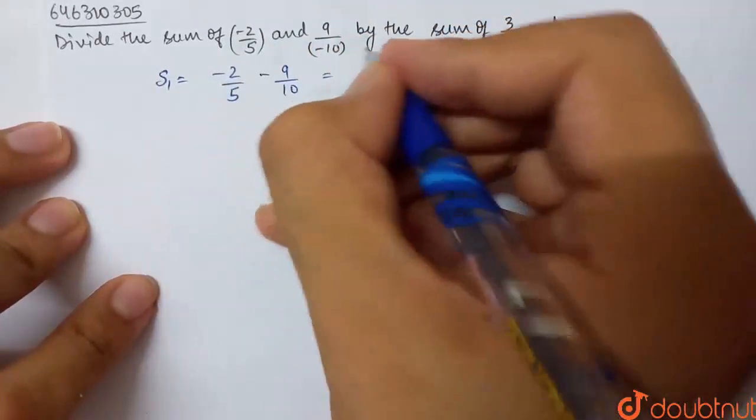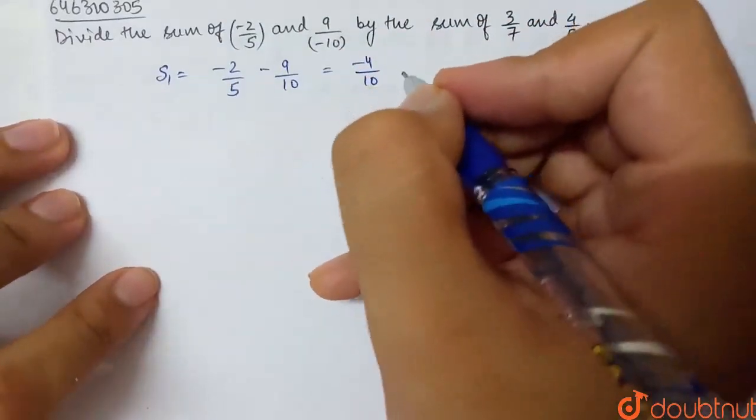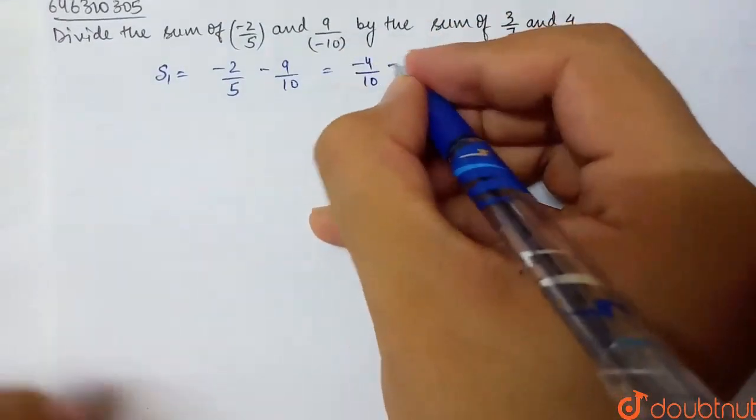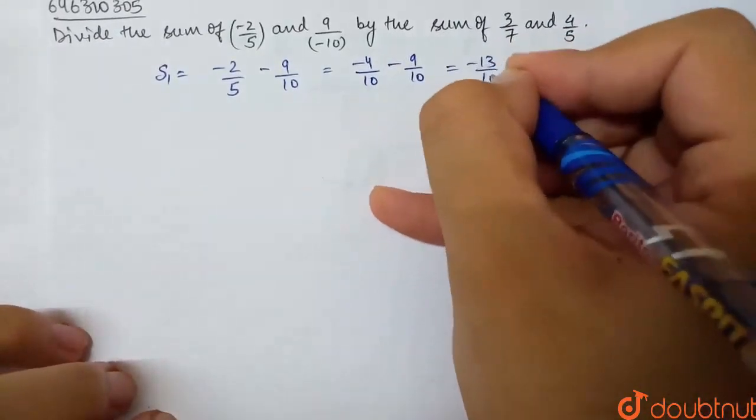Now we will multiply this denominator by 2, which is minus 2 into 2, which is minus 4/10. Multiply, divide by 2, and this is minus 9/10. So minus 4 minus 9, what is this? Minus 13/10. So my sum 1 is.